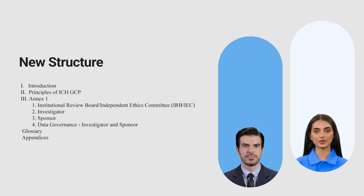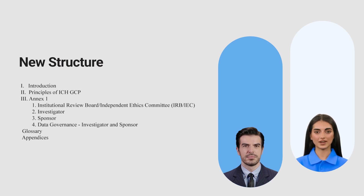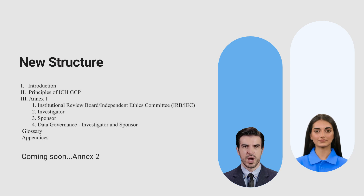The glossary has been updated to include new terms and definitions, ensuring clarity and consistency across the guidelines. The appendices provide detailed guidance on essential documents such as the investigator's brochure, clinical trial protocol, and essential records for the conduct of a clinical trial. The goal of the new structure is to make the guidelines more user-friendly and applicable across various types of clinical trials. ICH is also working on an Annex 2, expected to be released around May 2025, which will provide additional guidance on applying GCP principles to innovative trial designs and emerging data sources, further supporting regulatory and healthcare decision-making.